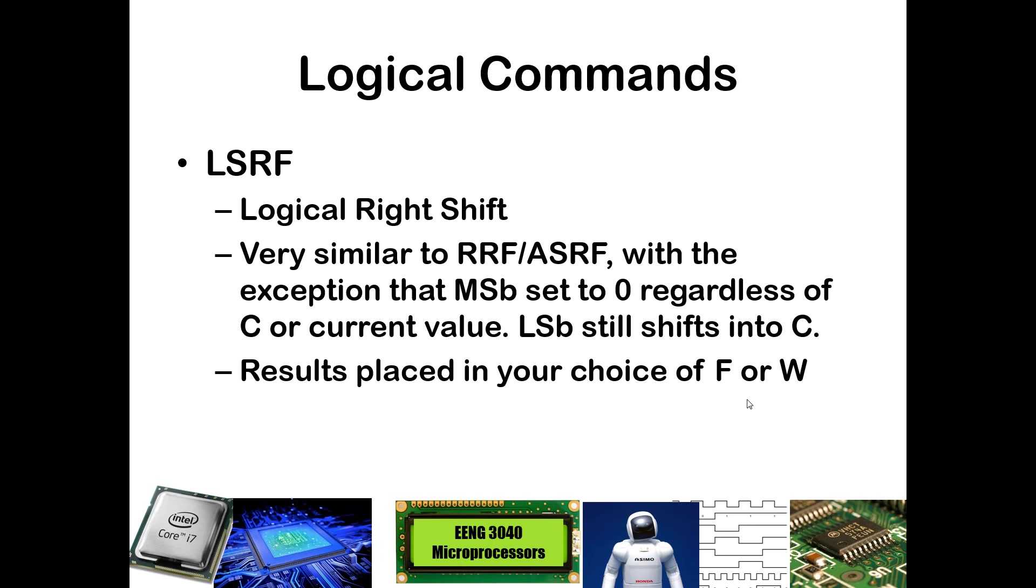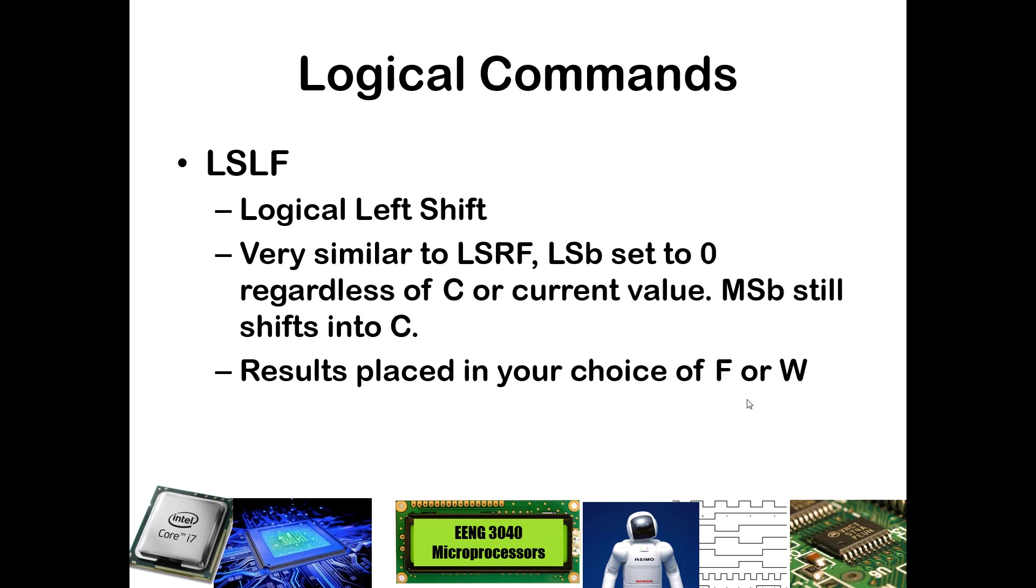The logical shift right is similar to that, but that is always going to put in a 0 regardless of what is in the C bit. You are rotating to the right and putting in a 0. This is good if you have an unsigned quantity and you want to divide by 2. There is a logical shift left that does exactly the opposite. In this case, the least significant bit is set to a 0 regardless of what is in C, and the most significant bit comes over into the C bit.